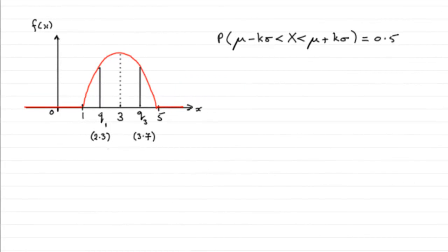Now for this last part, we're given what looks fairly complicated, and that is the probability of mu minus k sigma is less than x is less than mu plus k sigma, and all this equals 0.5, and we're asked to find out the value of k to two decimal places.